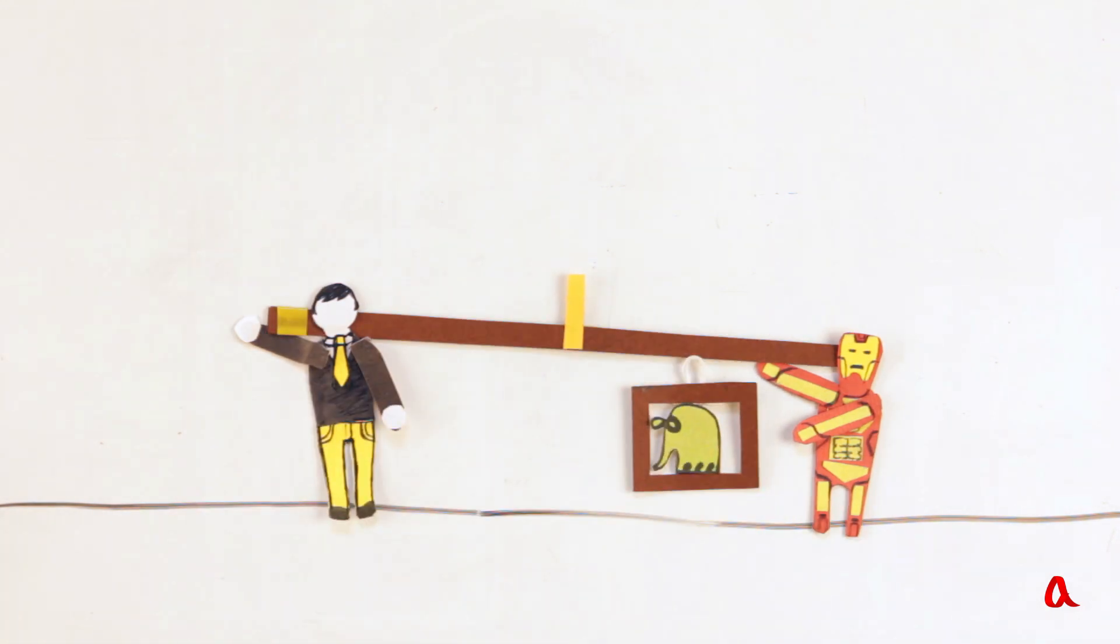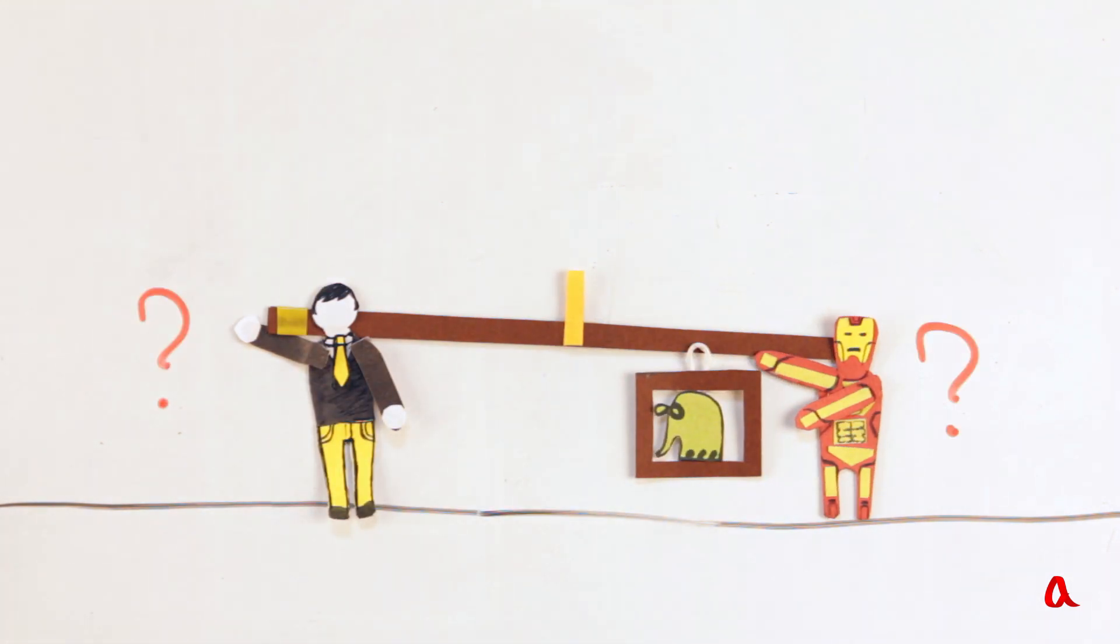Let's move the load closer to one of the carriers. The question is how the load's weight is distributed between them now.